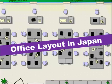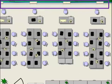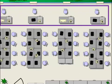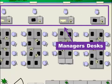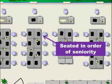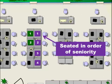Another thing PowerPoint is great for is diagrams. This is an office layout in Japan, and you can add labels to diagrams — here are the windows, this is where the managers would sit, and the employees are seated in order of seniority. By using a diagram, I'm able to explain a very complex seating arrangement very quickly in just a few seconds.